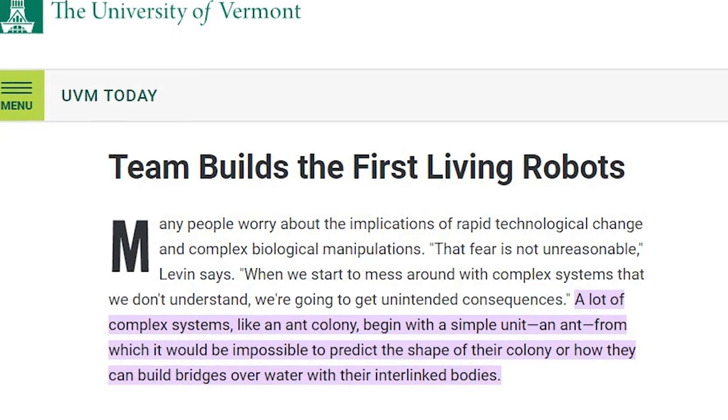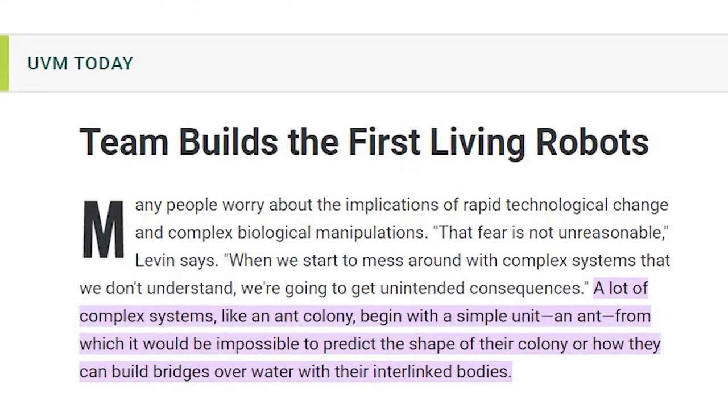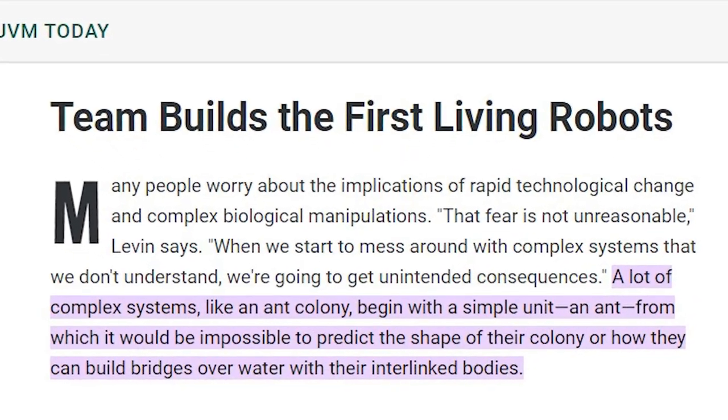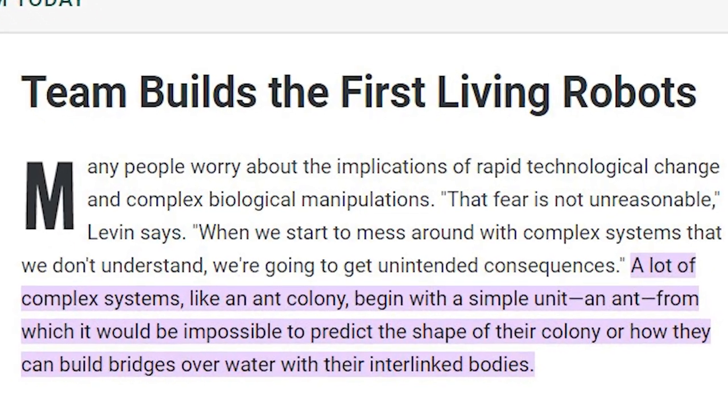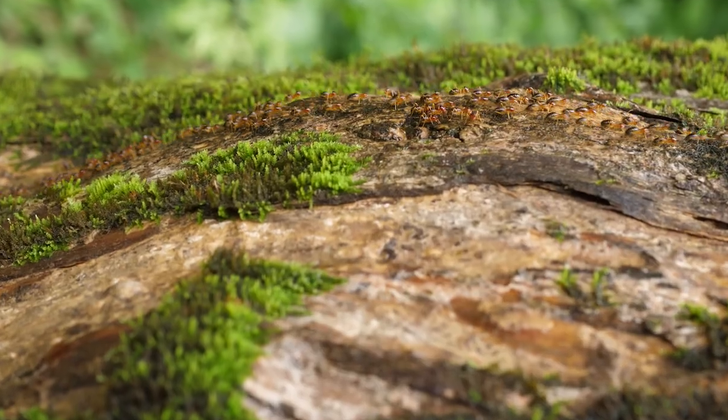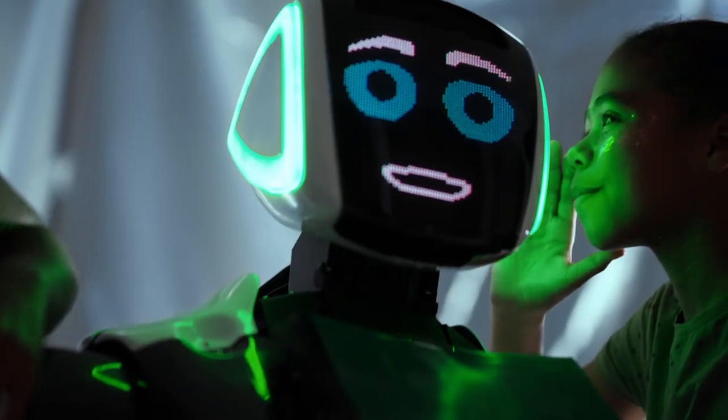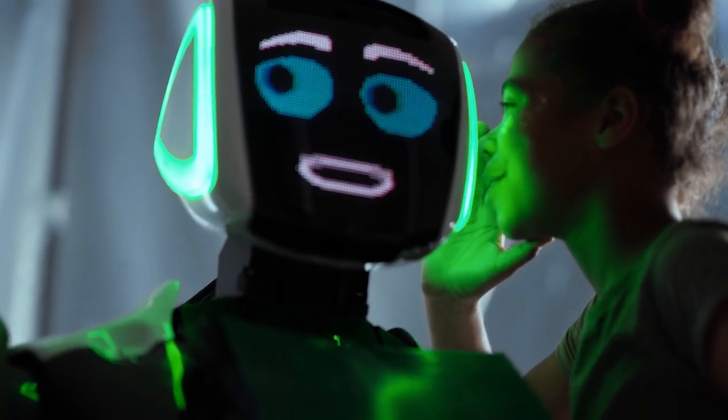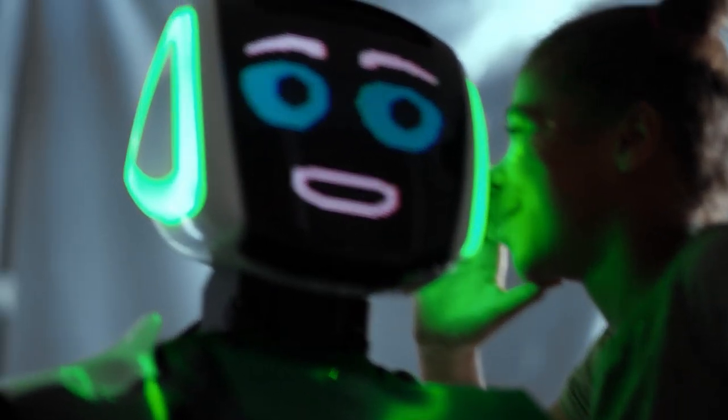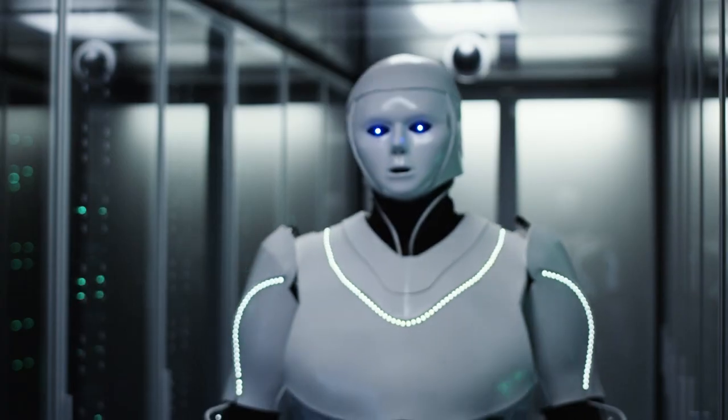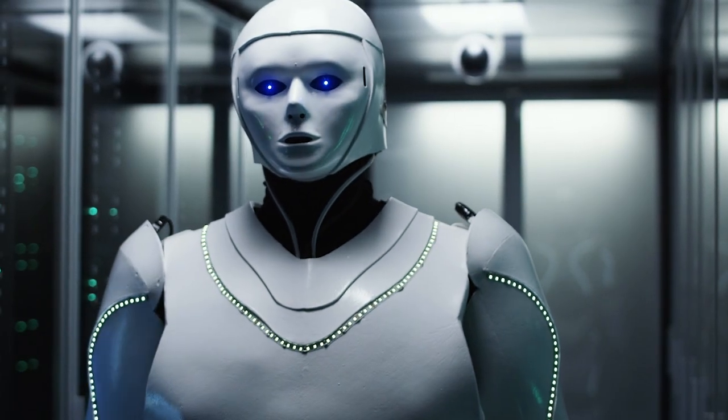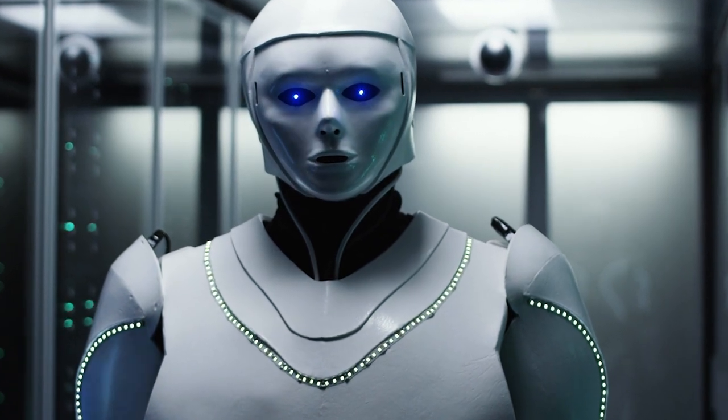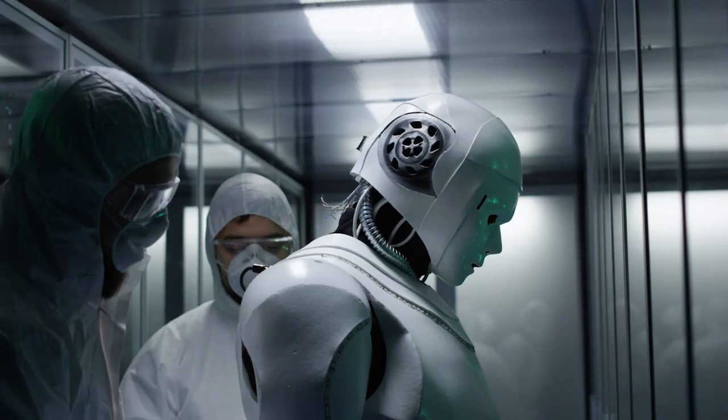Now, I want to give credit for the following example to an article that I read from the University of Vermont. Like an ant colony, it begins with a single unit, a tiny ant, from which it would be impossible to predict the shape of their colony, or how they could build bridges over water when they come together. Just like an ant's unpredictability, we may build living robots that seem harmless on the surface, but in fact, when you factor in advanced and evolved conditions, they could cause great harm to us and our planet.